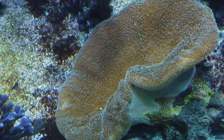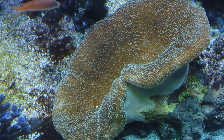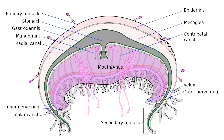Their bodies are radially symmetrical, which means that similar parts are arranged around a central axis. If you think of the jellyfish, it has tentacles hanging downwards from a bell-like structure. A cnidarian's body has two cell layers rather than three like higher animals such as humans. They have a sac-like coelenteron with one opening — it is similar to a mouth in humans but it also doubles as the anus.